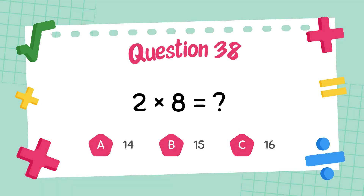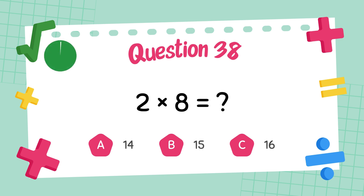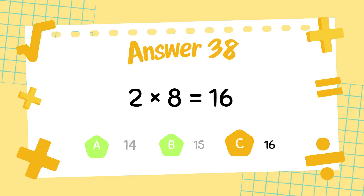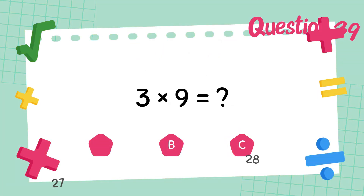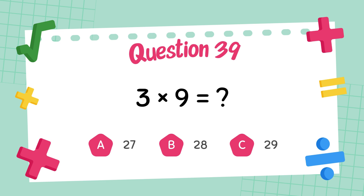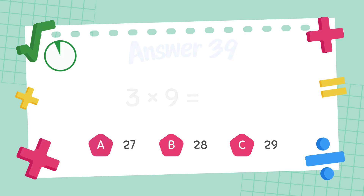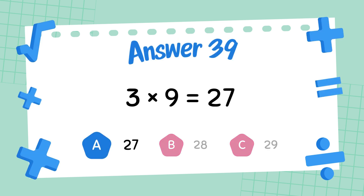What is 2 times 8? The answer is 16. What is 3 times 9? The answer is 27.